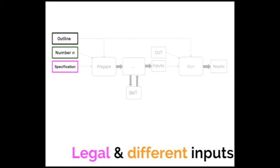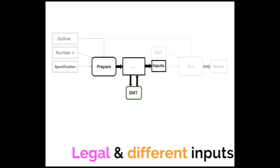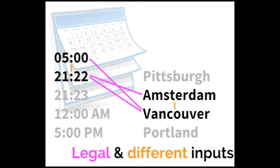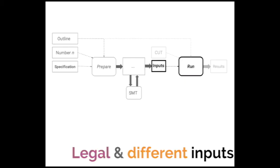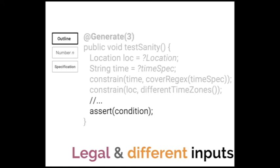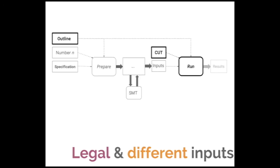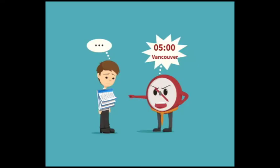The framework will take this outline, number, and specification, and pass it to its prepare phase. The prepare phase calls the solver, generates some of these legal and different inputs. So for our calendar service, it may find these three inputs. And then the framework passes those inputs to the run phase. The run phase calls the outline with those inputs, which will run the rest of the outline and assert whatever condition is at the end. This will call the code under test and produce some result, like maybe it will find a bug with a leading zero.